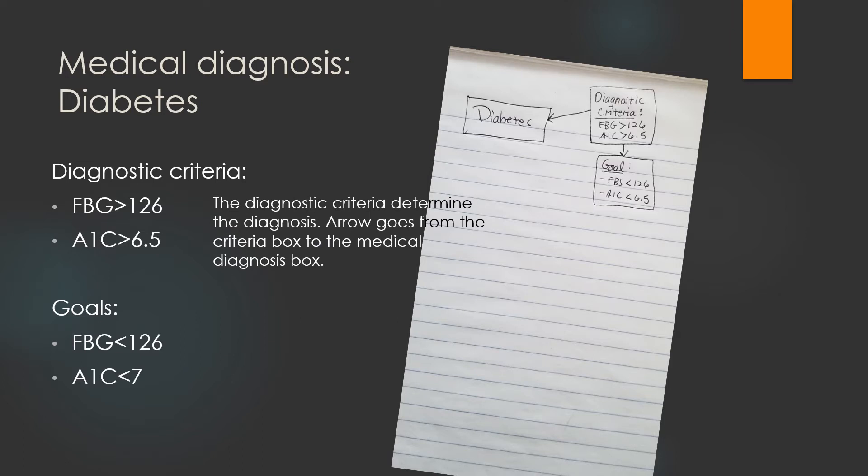The diagnostic criteria determine the diagnosis. The arrow goes from the criteria box to the medical diagnosis box. The goals are determined by the criteria. The arrow goes from the criteria to the goal box.